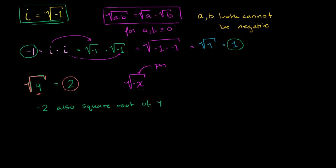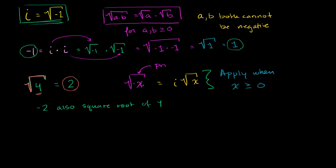And from that, you get that the square root of negative x is equal to i times the square root of x. This is only true when x is greater than or equal to 0. If x is greater than or equal to 0, then negative x is clearly a negative number, and we can apply this property. If x were less than 0, we would be doing nonsensical steps and would start to get nonsensical answers.